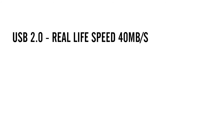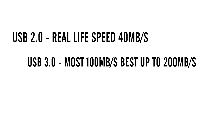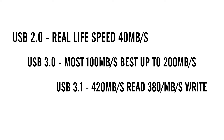Now comes the important question: do you get the advertised speeds in real life? The short answer is no. USB 2.0 reaches around 40 MBps most of the time. USB 3.0 drives do not reach their full potential, with most maxing out at around 100 MBps and the best reaching 200 MBps, which is still less than half of the theoretical maximum. USB 3.1 improves that further, getting up to 420 MBps for reads and 380 MBps for write speeds.